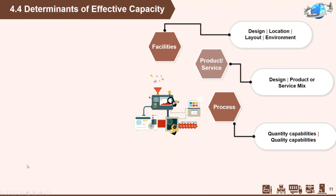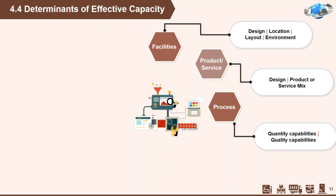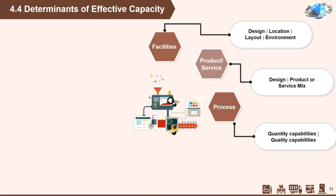Next, process factors. The quantity capability of a process is an obvious determinant of capacity. A more subtle determinant is the influence of output quality — if quality of output does not meet standards, the rate of output will be slowed by the need for inspection and rework activities. Productivity also affects capacity. Process improvements that increase quality and productivity can result in increased capacity. Also, if multiple products or services are processed in batches, the time to change over equipment settings must be taken into account. This is the reason why we do process audits and calibration.